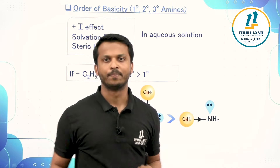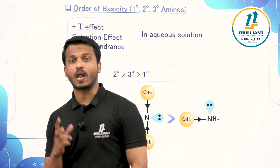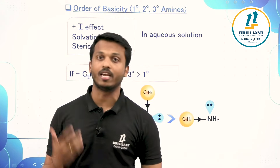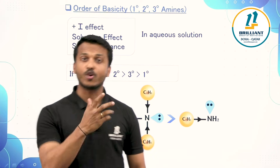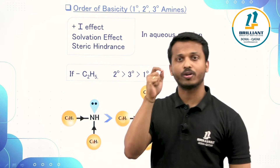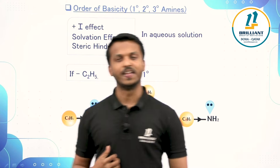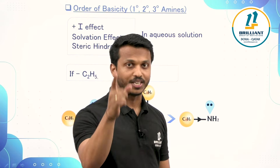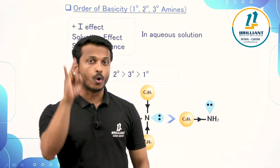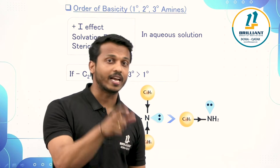Let me conclude. Amines are basic in nature — they are Lewis bases because they can donate a pair of electrons. When getting a basicity question, first classify as aliphatic, aromatic, or ammonia. Aliphatic amines are most basic due to +I effect (electron-donating groups); then ammonia; least basic are aromatic amines like aniline because the lone pair is in resonance stabilization. In gaseous state, consider only +I effect: tertiary > secondary > primary. In aqueous state, consider +I effect, solvation effect, and steric factor: if methyl — secondary > primary > tertiary; if ethyl — secondary > tertiary > primary.